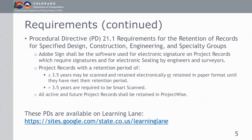PD21.1 also covers the legal retention requirement for records, which is split between three and a half years and less, or three and a half years or more. If the document is required to be retained three and a half years or less, it can be retained in paper format or electronically. If it's three and a half years or more, it must be smart scanned.